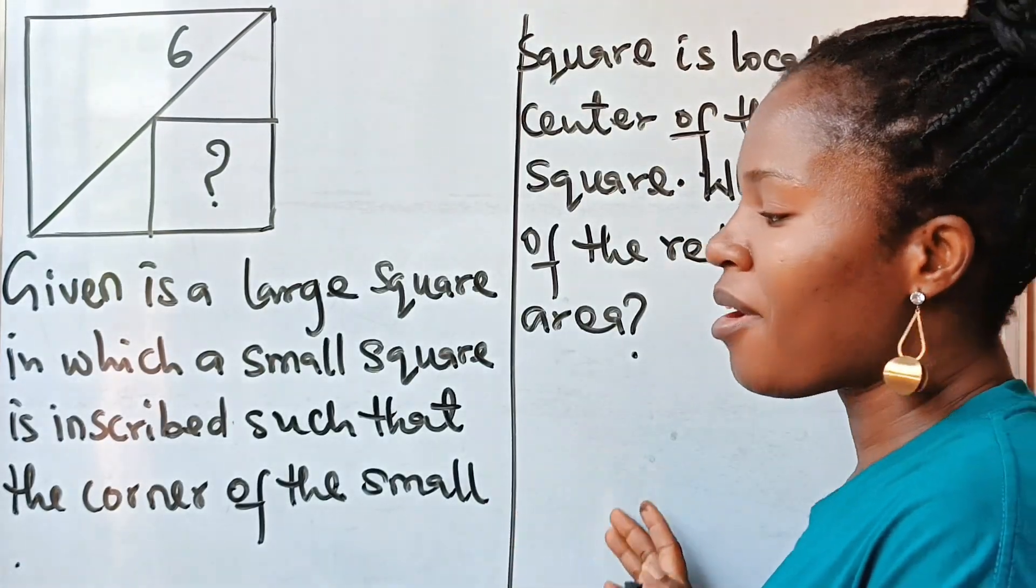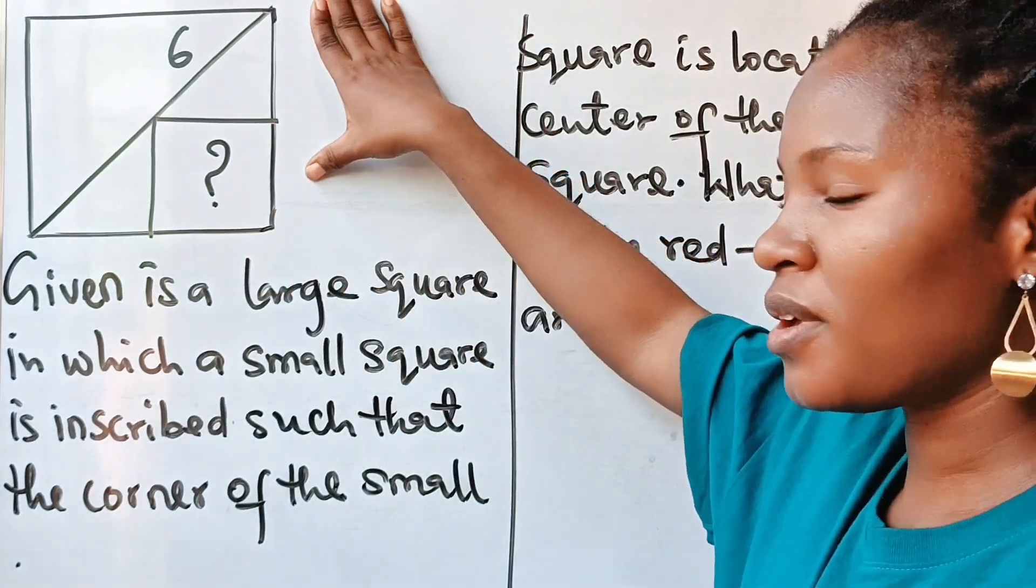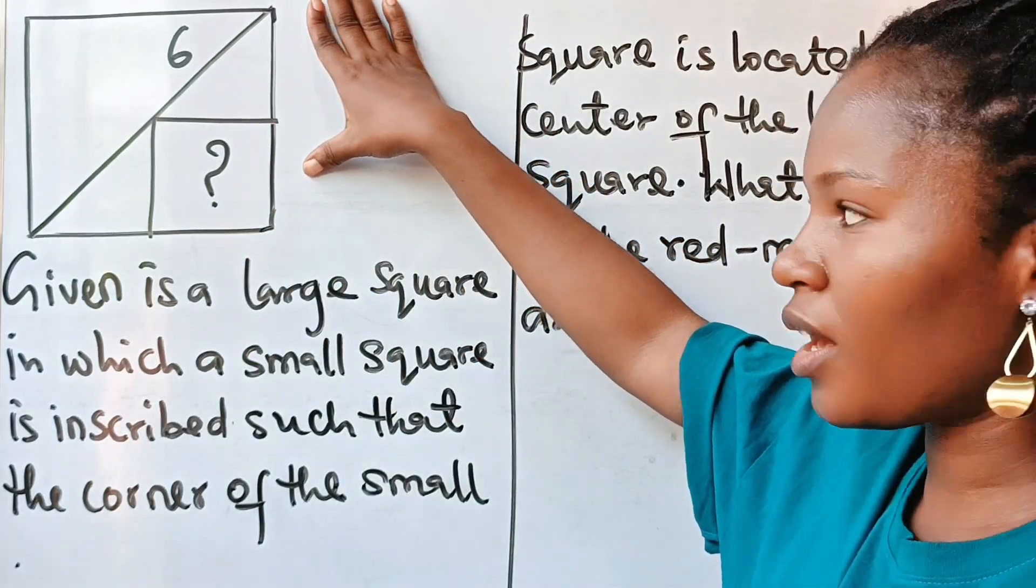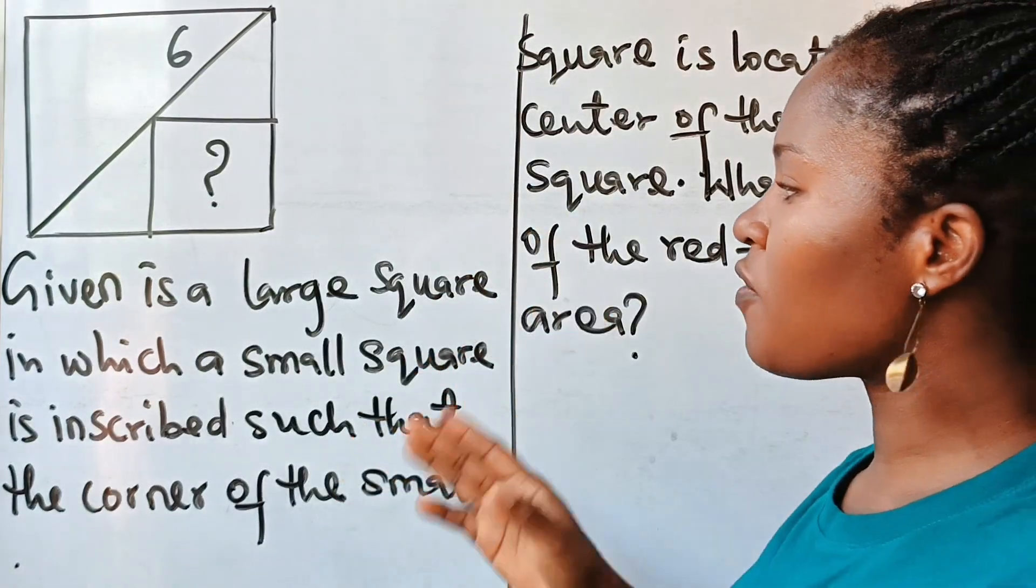Hi everyone, you are welcome back to my channel. Pardon my drawing, this is supposed to be a square but it's not drawn to scale. So this is a square and this is the question. It says given is...